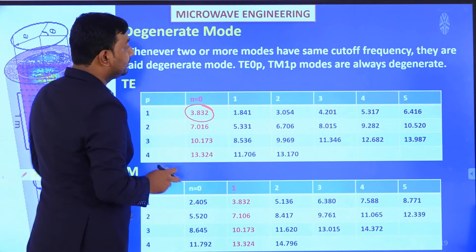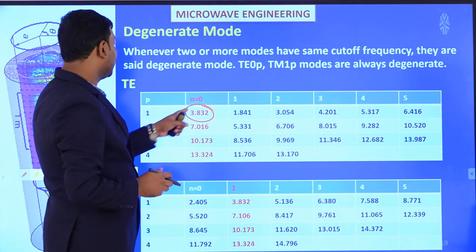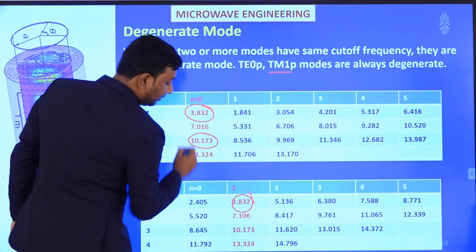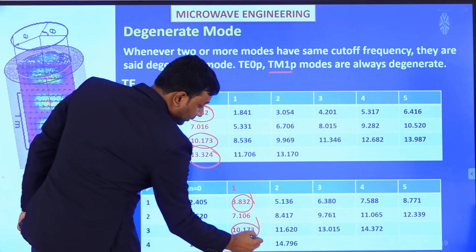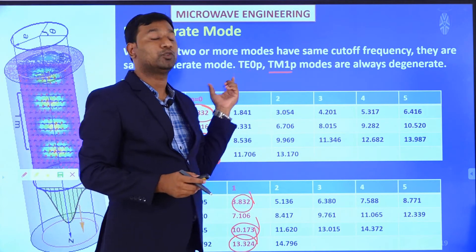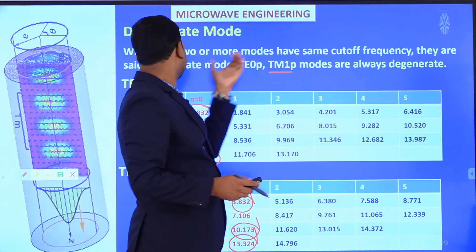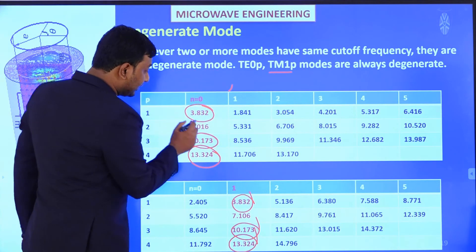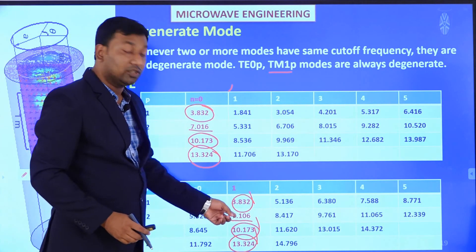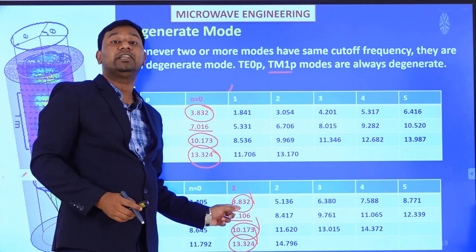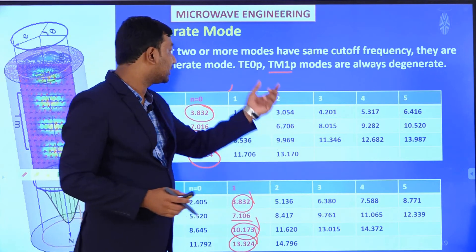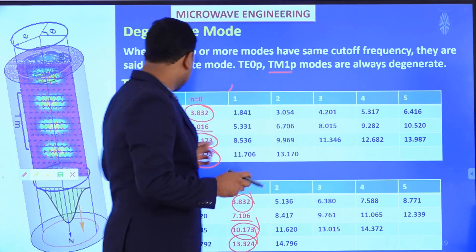Looking at the tables, the product kc·a for TE0p modes and TM1p modes yields the same values, making them degenerate. For example, TE01 and TM11 share the same value of kc·a equal to 3.832. There are small differences for some entries, but many values are exactly equal. Modes having the same cutoff frequency are called degenerate modes.